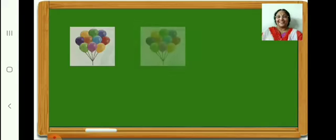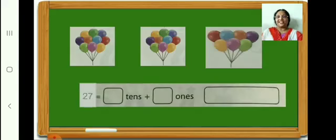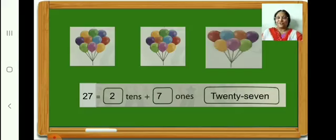How many balloons? 10. Here, how many balloons? 10. In this bunch, how many balloons? 7. Therefore, in all there are 27 balloons. 27 is equal to 2 tens plus 7 ones. Now you have to write along with teacher. Write the number name 27. Let us go on to the next.